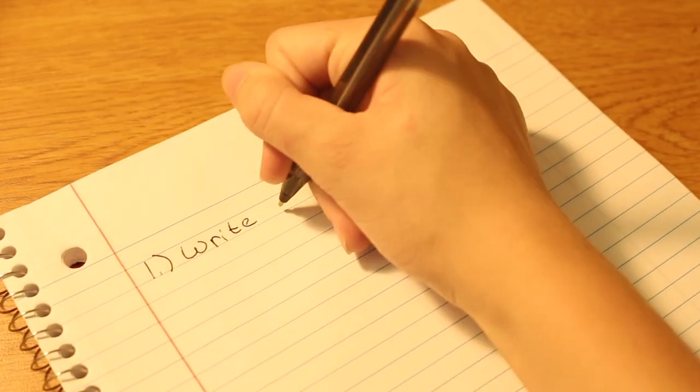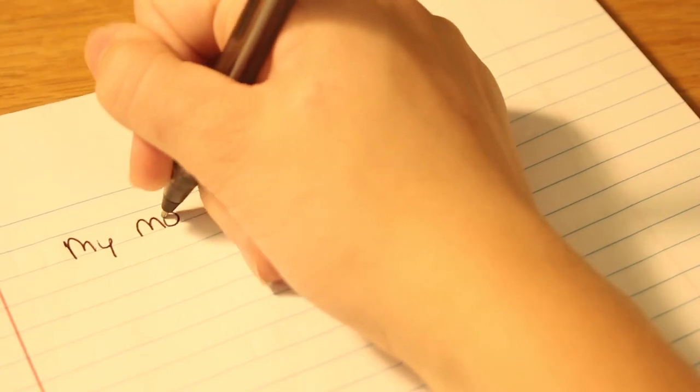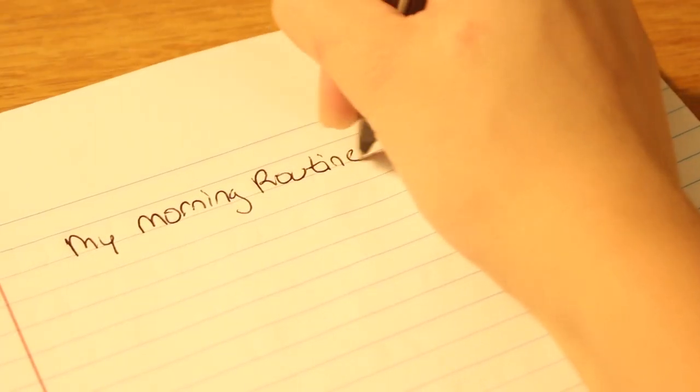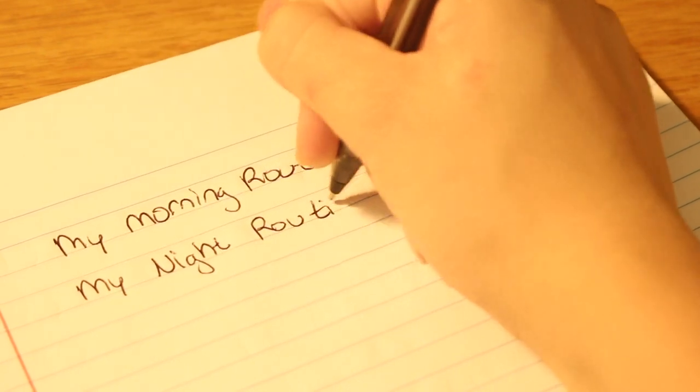The first one is a routine notebook where you write down your different routines. You can have some for morning, night, after school, after work. You can make multiple ones for the same subject depending on how you're feeling, the day of the week, or what you have going on.